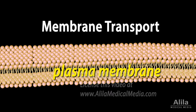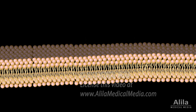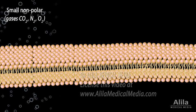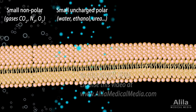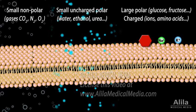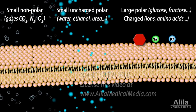All animal cells are enclosed in a plasma membrane, which consists of two layers of phospholipids. The hydrophobic nature of the cell membrane makes it intrinsically permeable to small nonpolar and uncharged polar molecules, but nonpermeable to large polar molecules and charged particles.